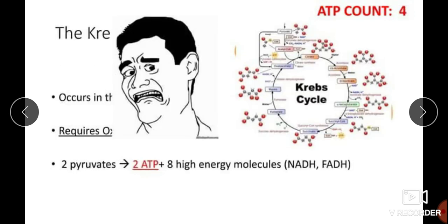The Krebs cycle occurs in the mitochondria and requires oxygen. It is a cyclic reaction. The net gain in the TCA cycle is two ATP molecules. In the Krebs cycle, eight high-energy molecules are formed — NADH and FADH2. But the actual ATP molecules produced in the Krebs cycle are two. So combining glycolysis and the Krebs cycle, the ATP count is four.